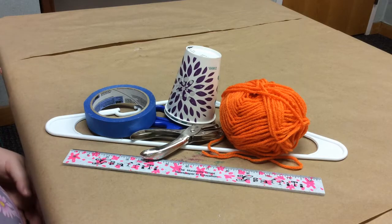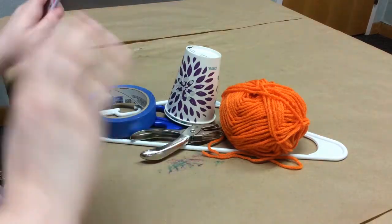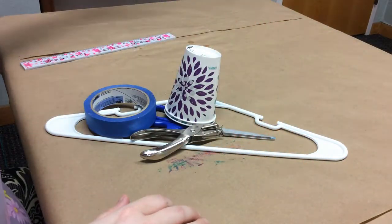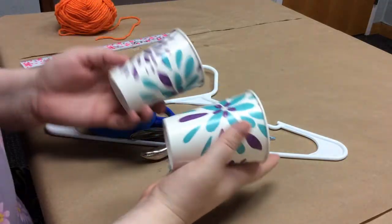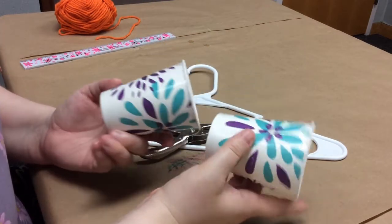For this activity you're going to need a couple things: a ruler, some yarn, two paper cups—you could use plastic, I do advise paper for this, but you could use plastic.